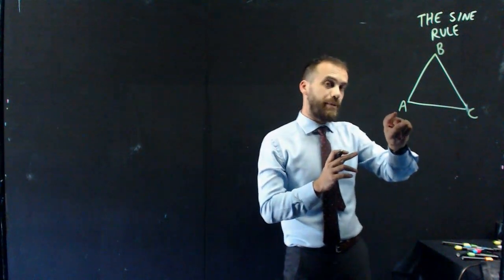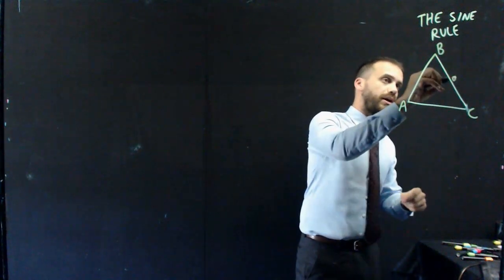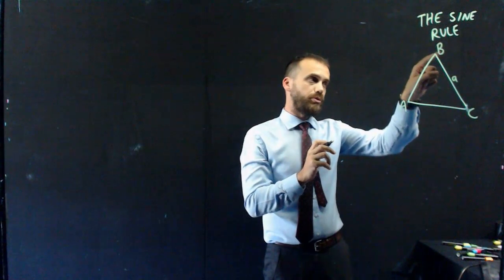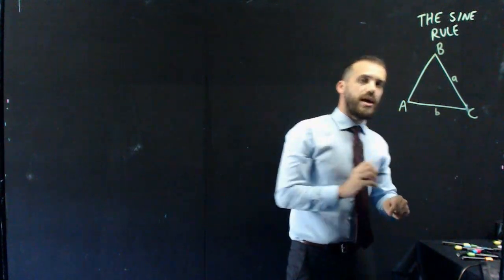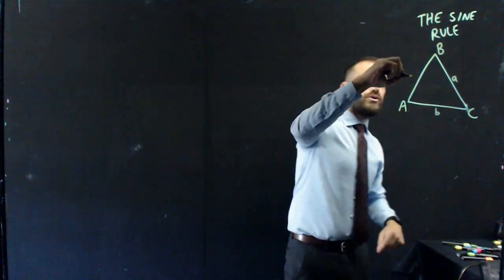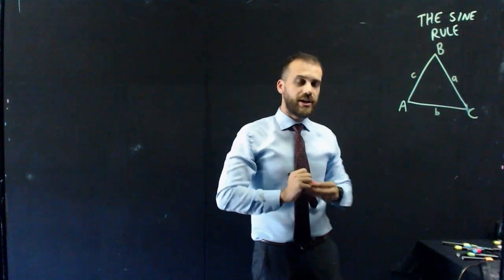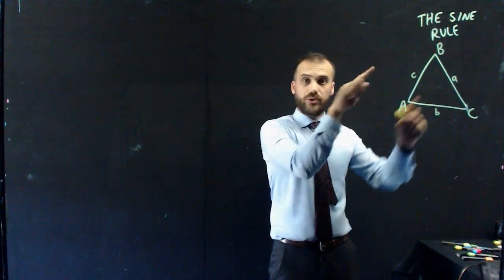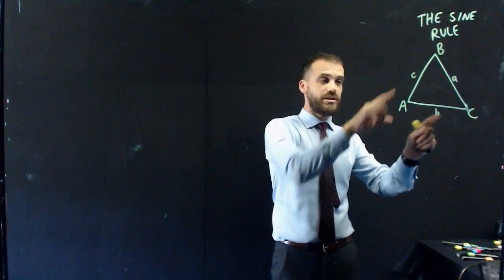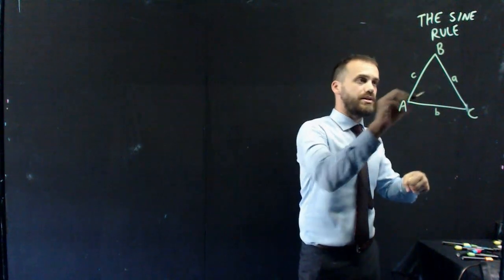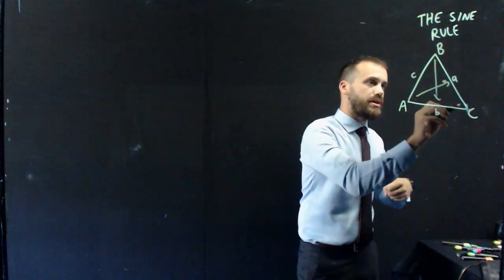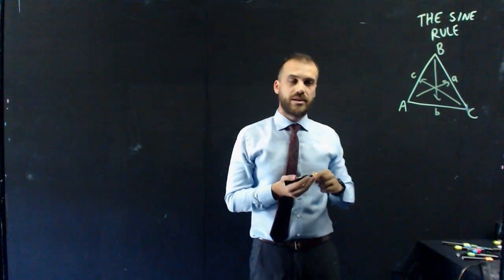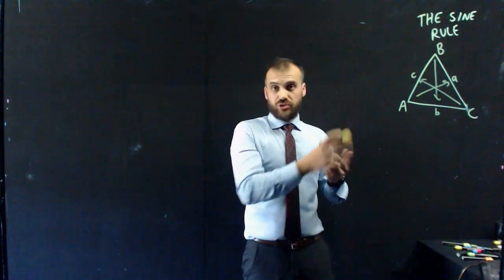Next up, whatever's opposite capital A, you call it small a. Whatever's opposite capital B, you call it small b. And whatever's opposite capital C, you call it small c. I can't reiterate enough. It doesn't matter what order you do A, B, and C in on the vertices, as long as A is opposite A, B is opposite B, and C is opposite C. We have labeled our triangle.